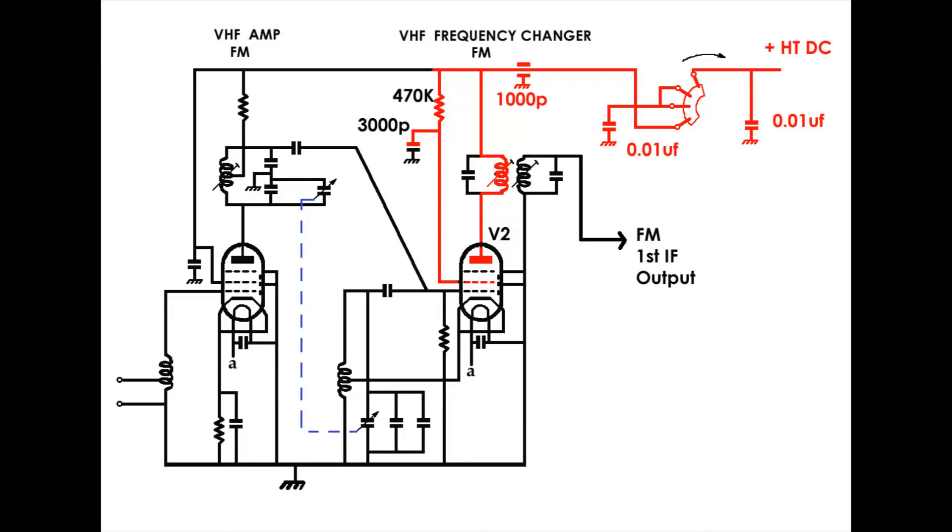It also goes down through the 470K resistor to the screen grid of V2. And local to the screen, it's decoupled with the 3000 pF capacitor to ground. The function of the screen grid, that's the second grid up from the bottom, is to enhance the performance of the valve. And it's all a bit boring. Suffice it to say that it has a positive DC voltage on it. But essentially the valve will act as a triode.